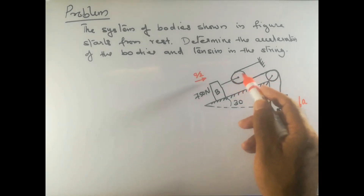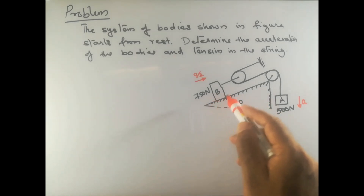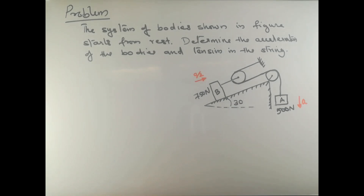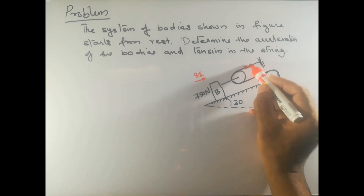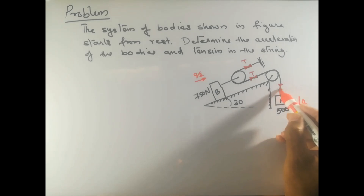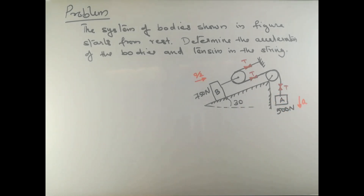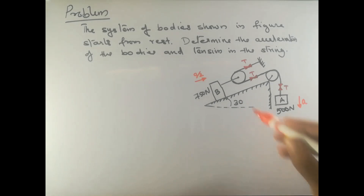Since friction in the pulleys is absent and the pulleys are weightless, the tension in the string will be the same everywhere — it is T throughout. The angle of the inclined plane is 30 degrees.